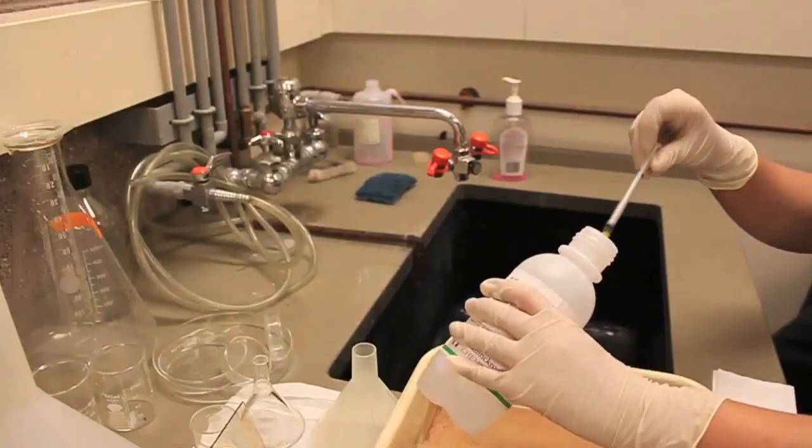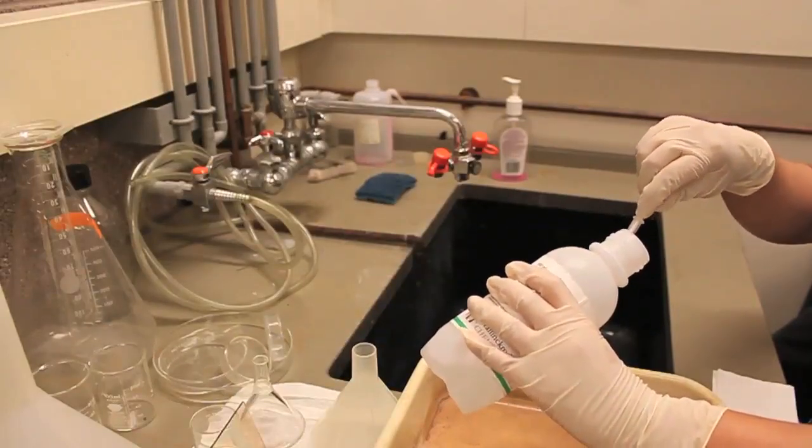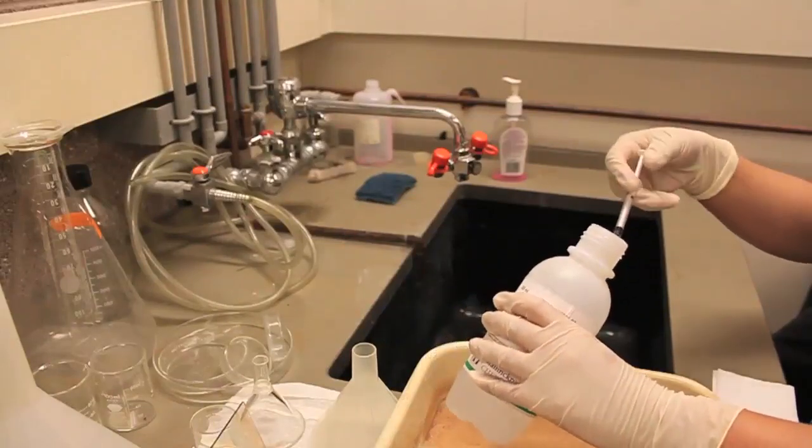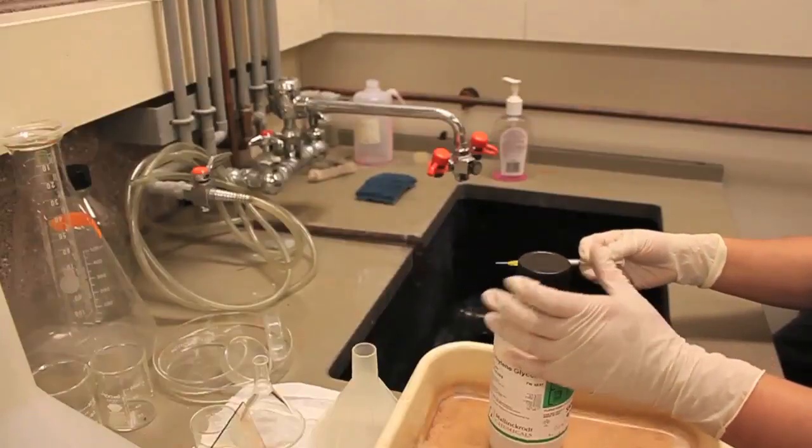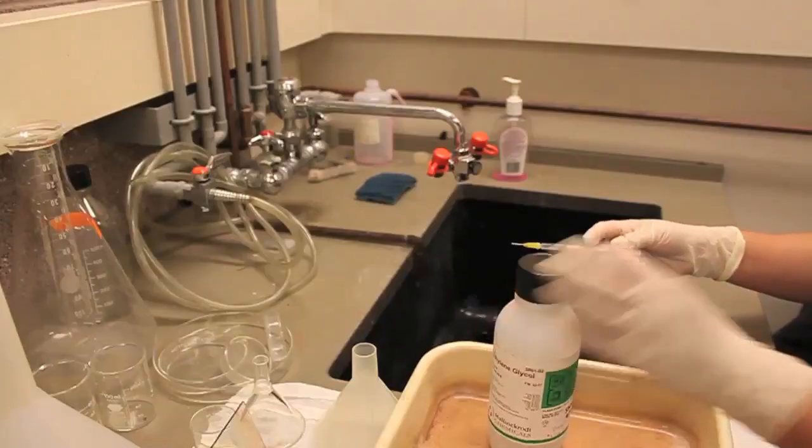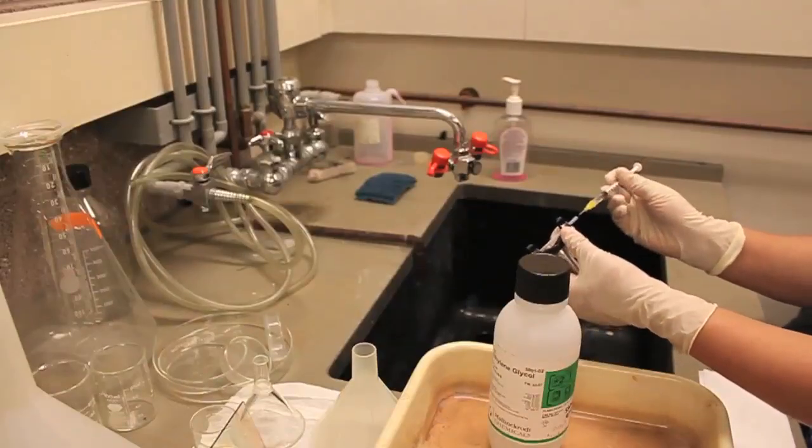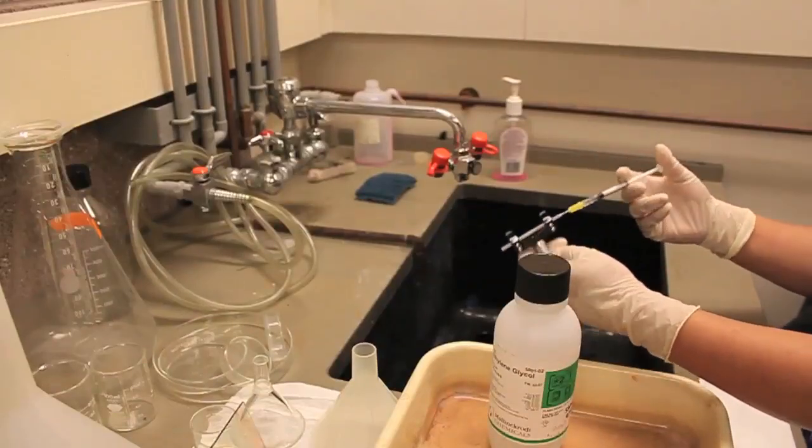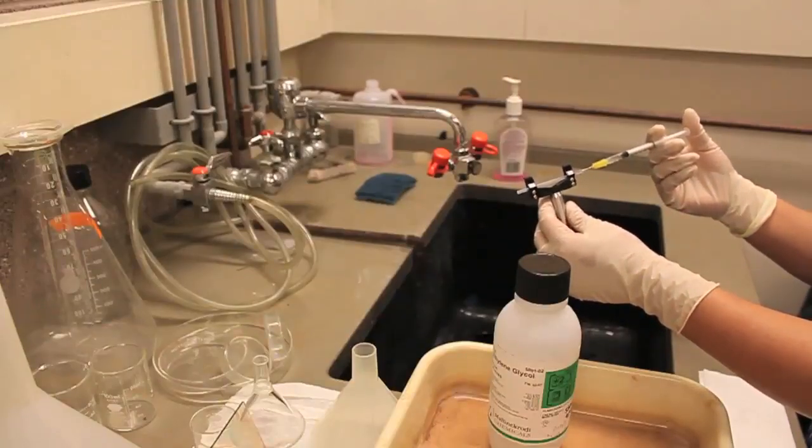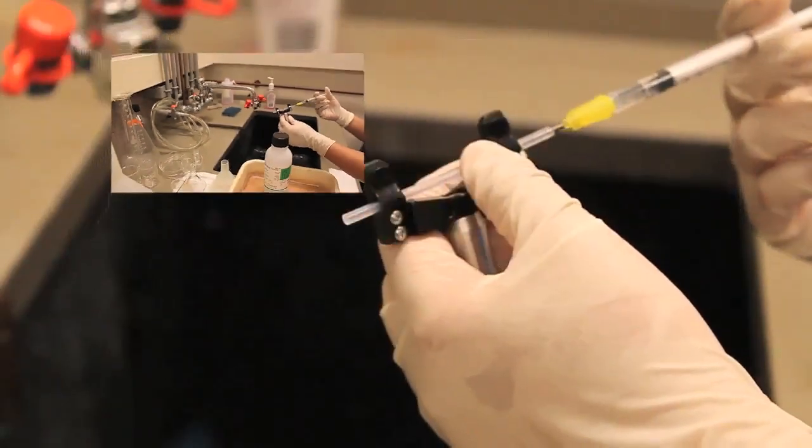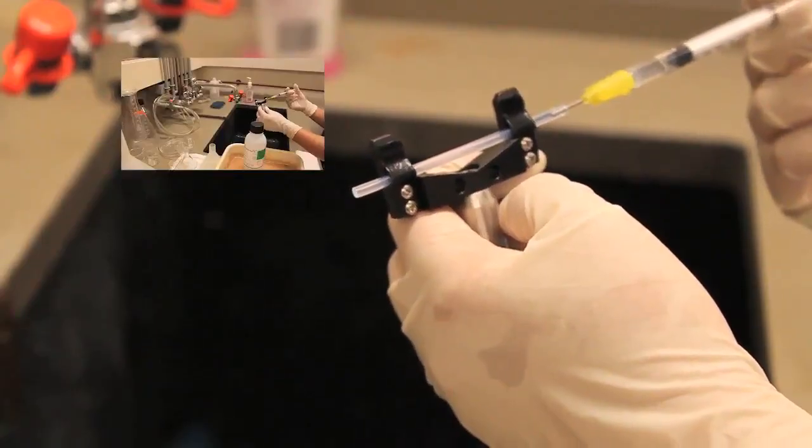Extract some of the ethylene glycol using a clean syringe. Use a syringe to carefully fill the Teflon tubing, making sure there are no bubbles. It's ideal to have a small droplet at the end of the tubing.